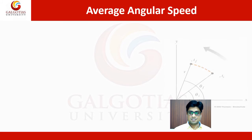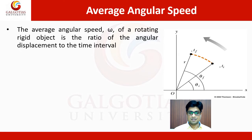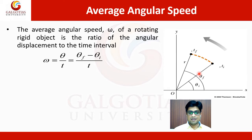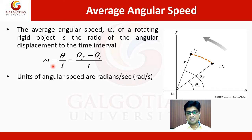Now we will discuss average angular speed. The average angular speed, denoted by omega, of a rotating rigid object is the ratio of the angular displacement to the time interval. If initially the angular displacement is theta one and after time tf it reaches theta f, then the average angular speed equals theta final minus theta initial divided by the time taken. The unit of angular speed is radians per second.